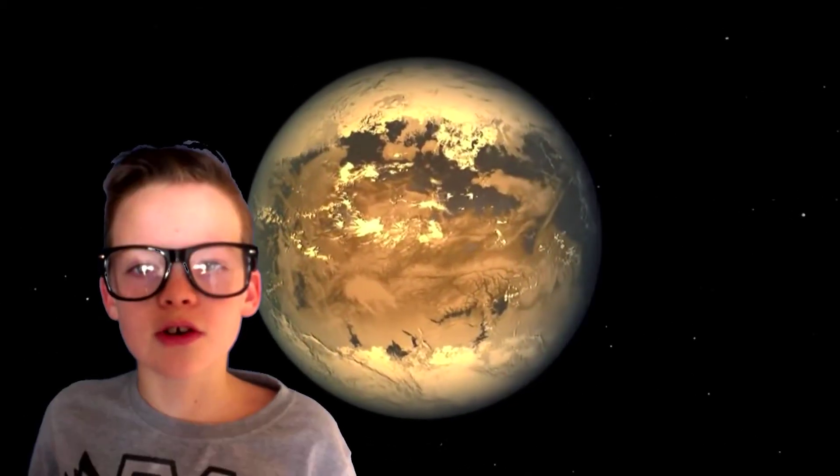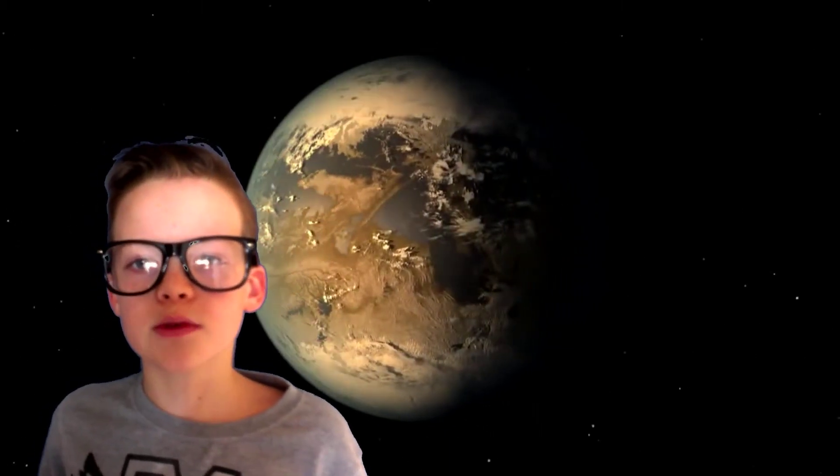Scientists think that the actual tilt on Kepner 186F is probably smaller than Earth's, so this would make the planet spin very, very slowly, much slower than Earth. This would mean its days would be much, much longer than ours, perhaps even months longer. Also, it would mean Kepner 186F would not have seasons like we do.